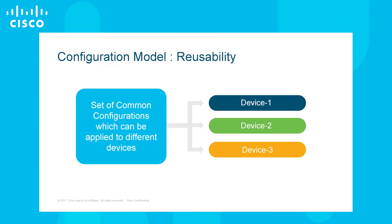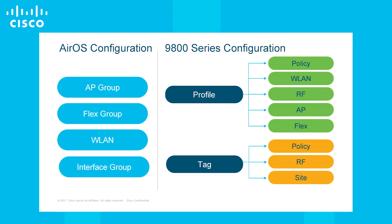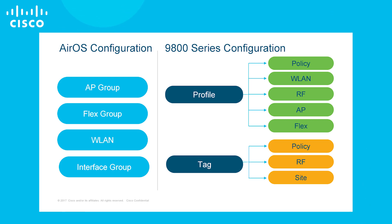The configuration model is focused on reusability of common characteristics across different parts of the network. The previous objects from Aeros controllers such as AP groups, WLANs, and interfaces have been migrated into different profiles which can be easily applied at different points through tags without having to reconfigure all details again.